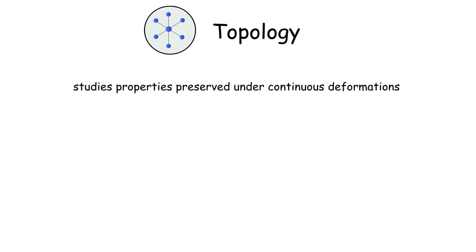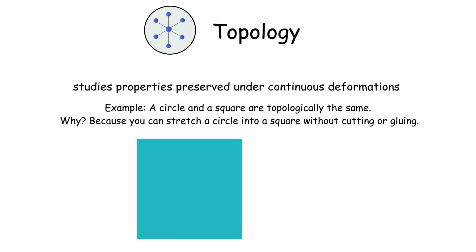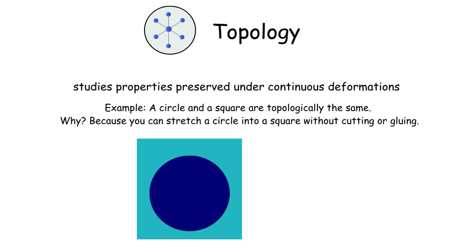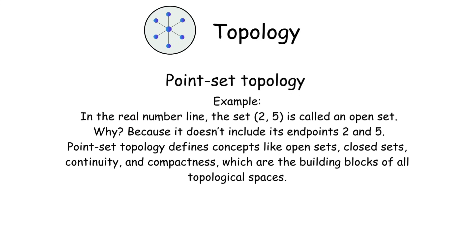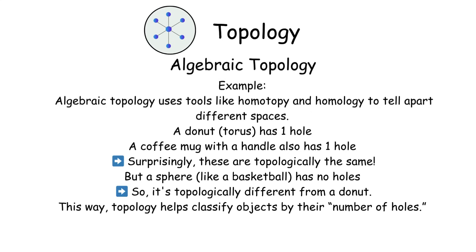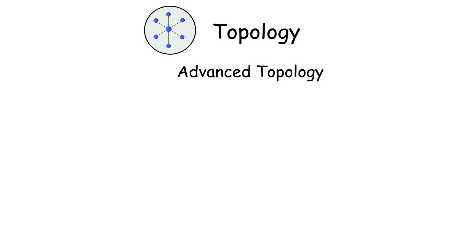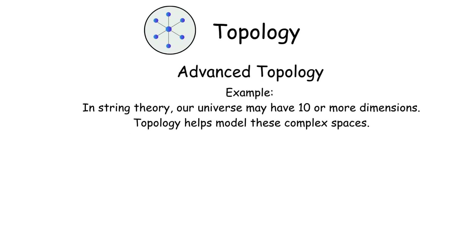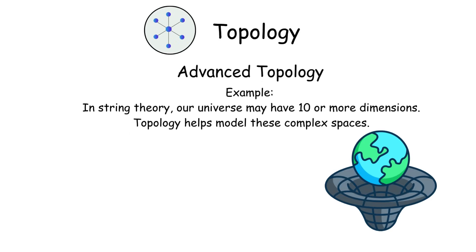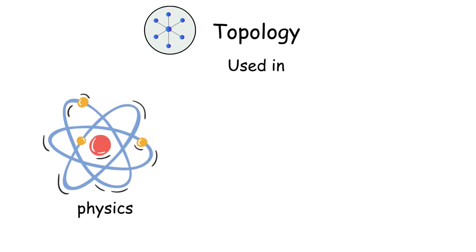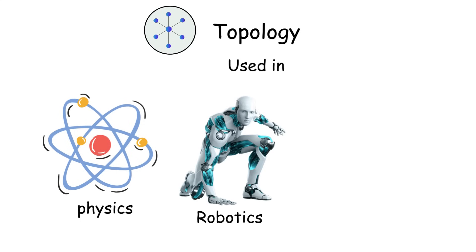Topology. Topology studies properties preserved under continuous deformations, like stretching or twisting. Point-set topology examines general spaces, defining concepts like openness and connectedness. Algebraic topology uses algebraic tools to classify spaces, revealing their fundamental shapes. Advanced topology explores higher dimensional spaces, impacting string theory and data analysis. Known as rubber sheet geometry,